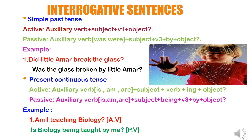Present continuous tense in interrogative sentence: always start with the auxiliary verb. In active voice: auxiliary verb (is/am/are) plus subject plus verb+ing plus object. In passive voice: auxiliary verb (is/am/are) plus subject plus 'being' plus V3 plus 'by' plus object. It should be in question form. Example: 'Am I teaching biology?' becomes 'Is biology being taught by me?' — 'is' because 'biology' is singular. 'Teaching' changes to 'taught' (V3), and 'I' changes to 'me'.